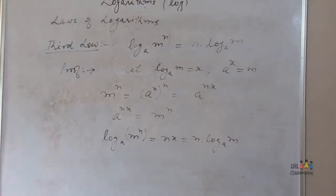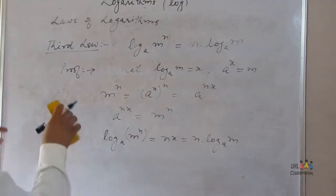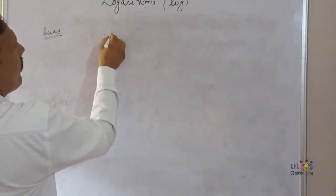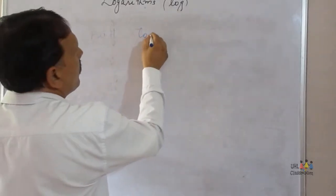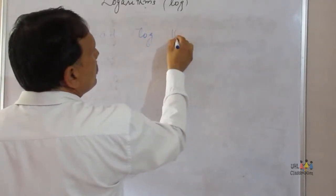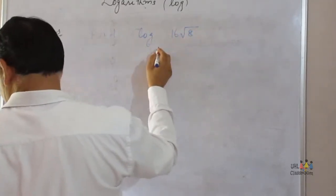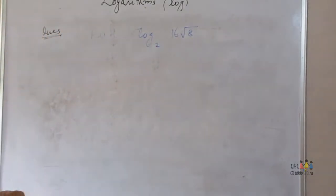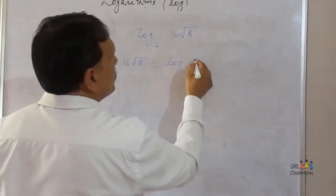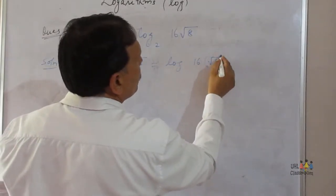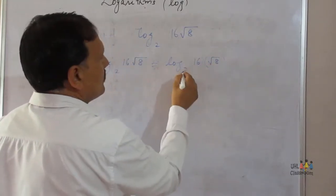Now we have related questions to the formulas. Find log of 16 into square root of 8 to the base 2. I can write this as log of 16 into root of 8, m into n, to the base 2.